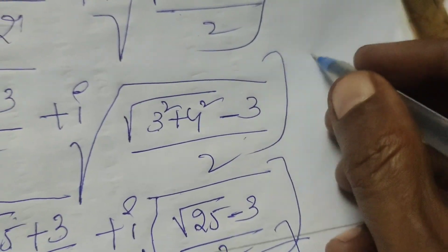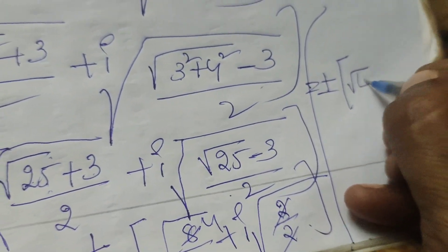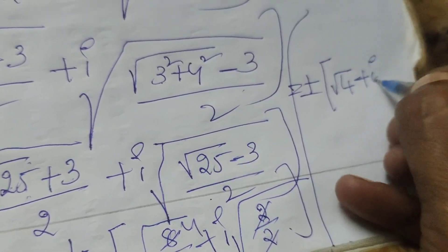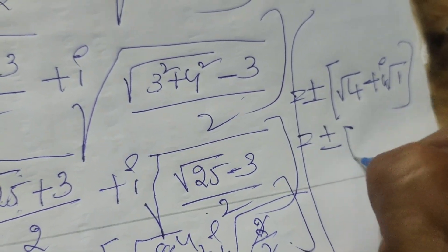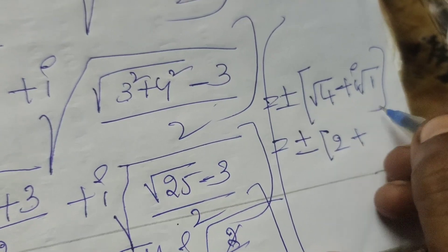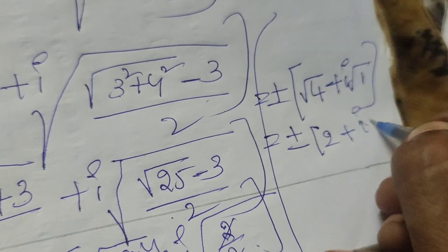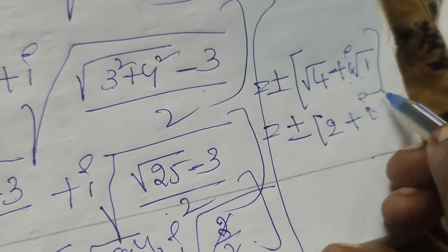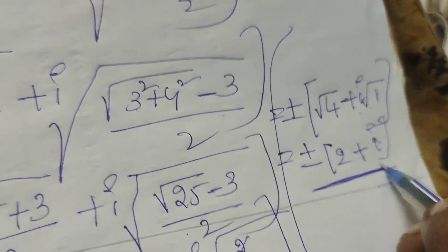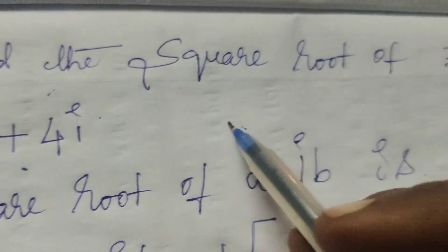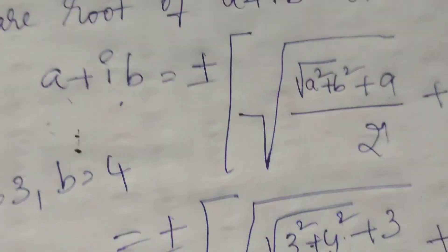Therefore, √4 equals 2 and √1 equals 1, so 1 into i means i. The required square root of 3 plus 4i equals plus or minus (2 + i). Okay, thank you.